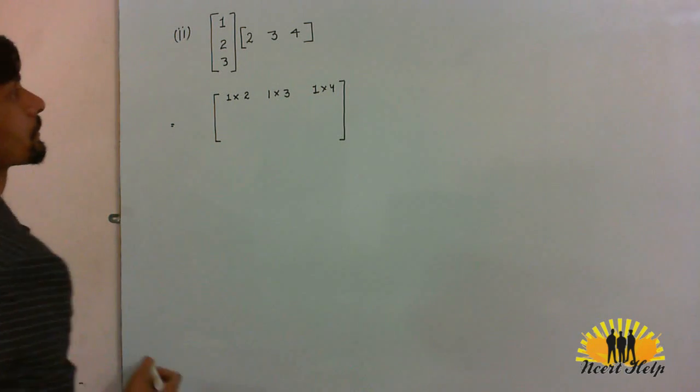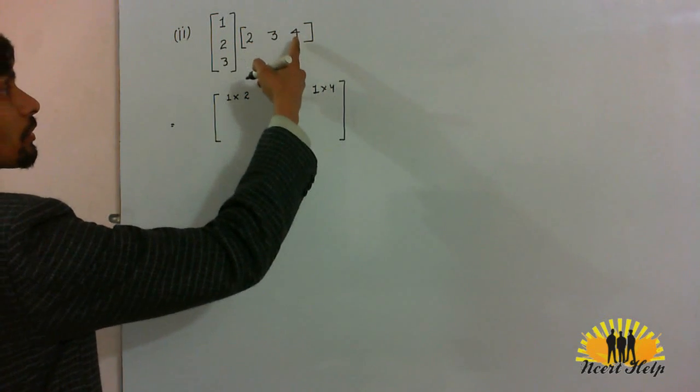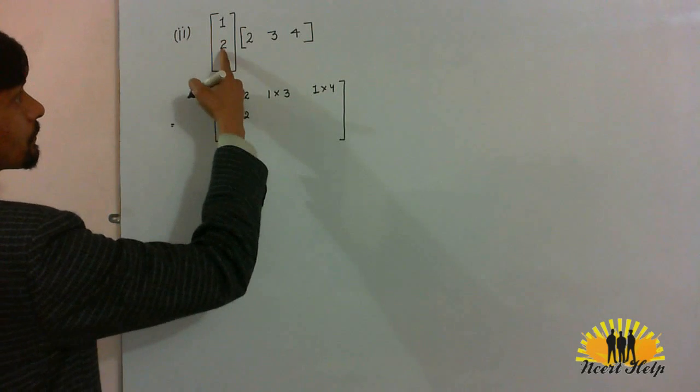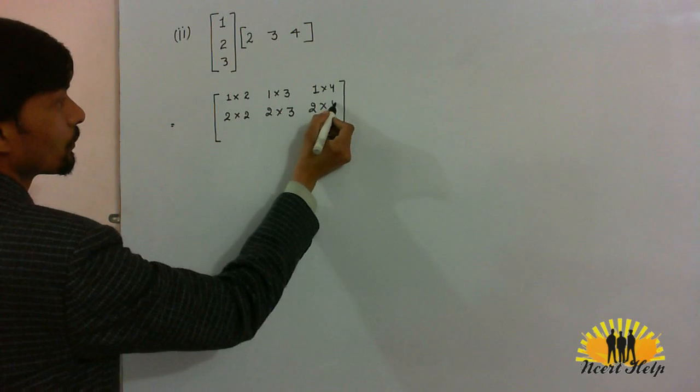Now, up to the second row. Second row similarly with the first column, second column and third column of the second matrix. So, we will get 2 into 2, 2 into 3, 2 into 4.